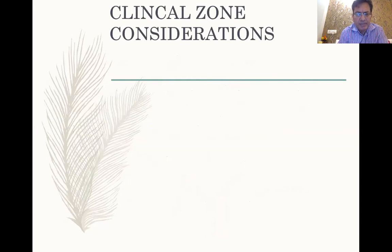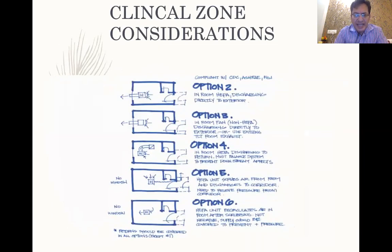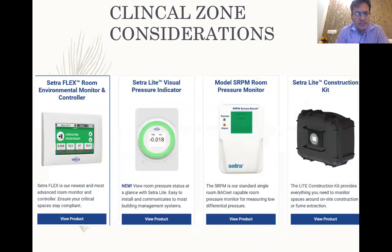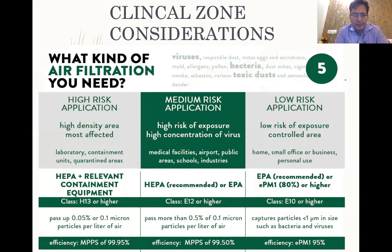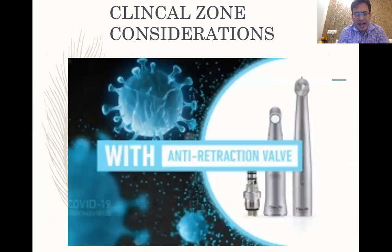A UV unit or HEPA filter should be in place to maintain negative pressure in the room, along with a room diffuser for air returning to the room. The CDC and the association for heating and refrigeration have provided different setups depending on whether you have a window or not — check their website for what suits your operatory best. Numerous systems with environmental monitor controls and visual pressure indicators are available. For medium-risk medical facilities, a minimum Class E12 or higher air filtration system is required.